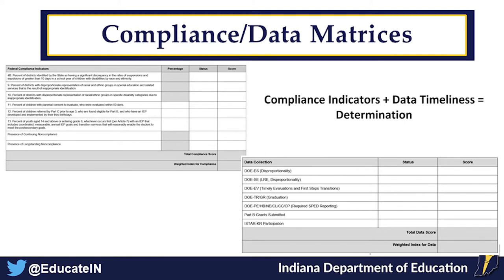Compliance indicators: indicators 4, 9, and 10 are disproportionality — those belong to me. Indicator 11 is meeting the 50-day timeline — that's Sarah's. Indicator 12, transitioning from Part C to Part B, is Jessica's preschool indicator. Indicator 13, transition IEPs, belongs to Michelle, who isn't here today but can be reached by email. Data timeliness and completeness is Brandon's area. If you submitted something and it wasn't fully checked off, it may not have been recorded as complete — please reach out so we can check.